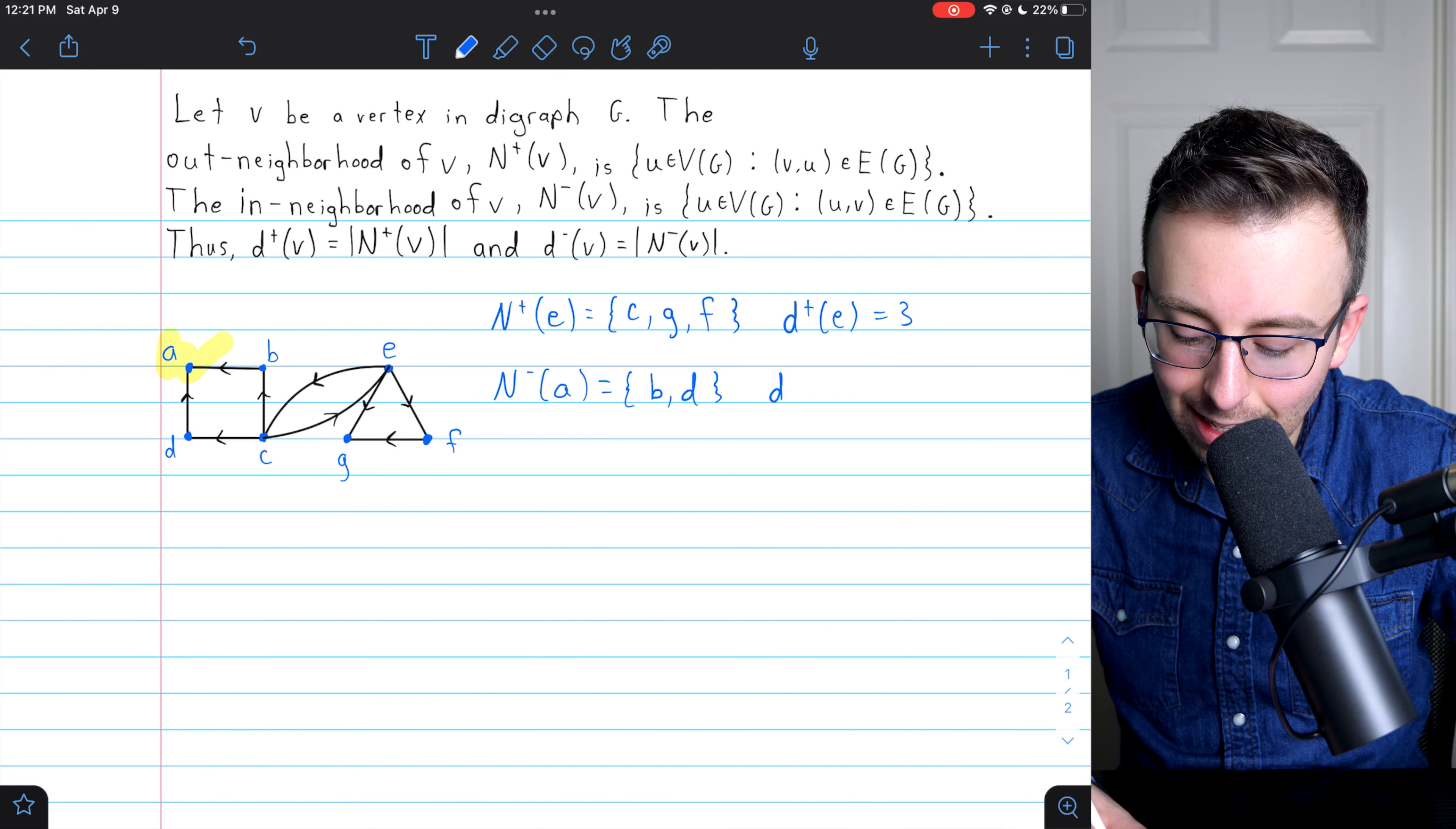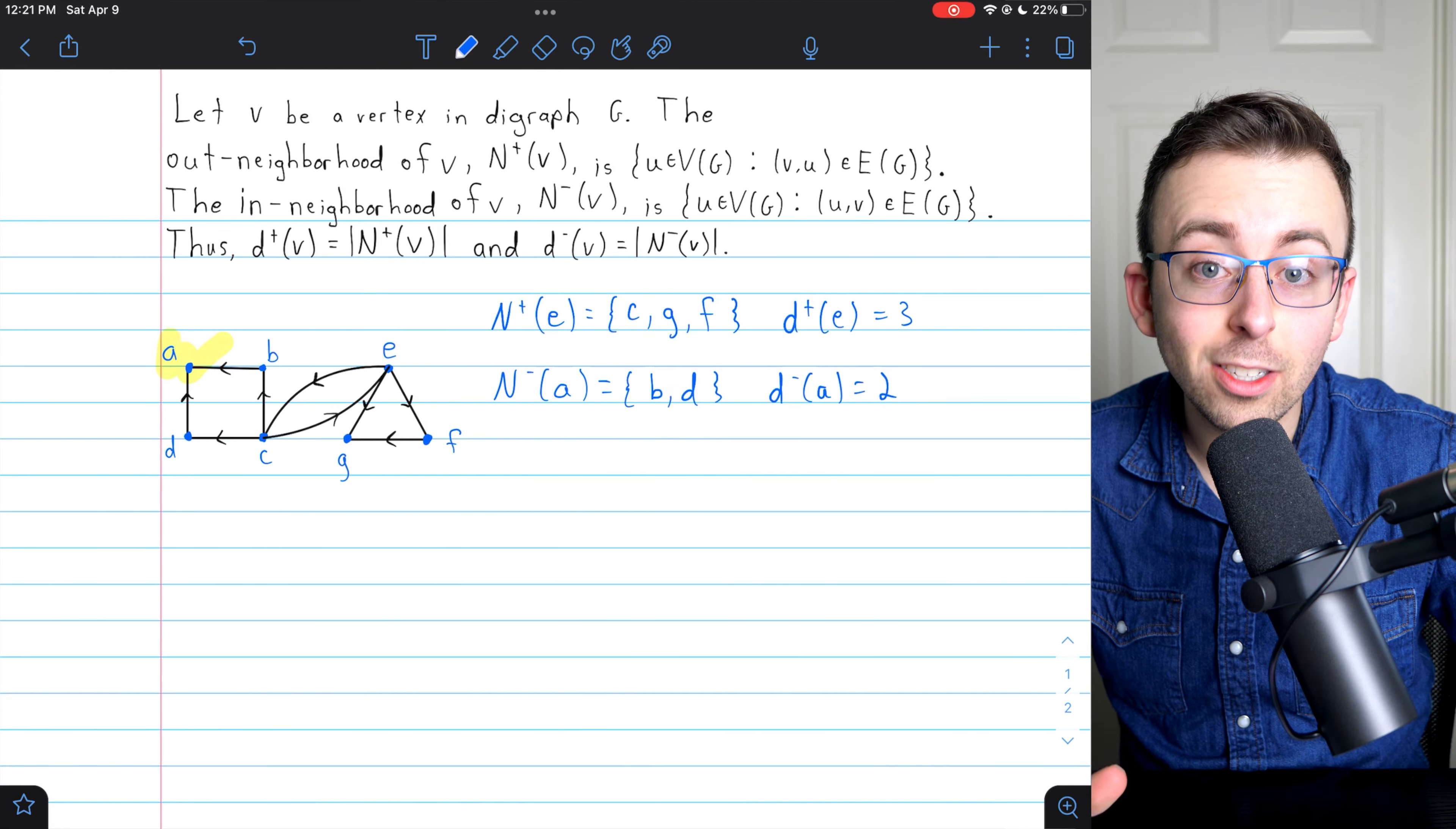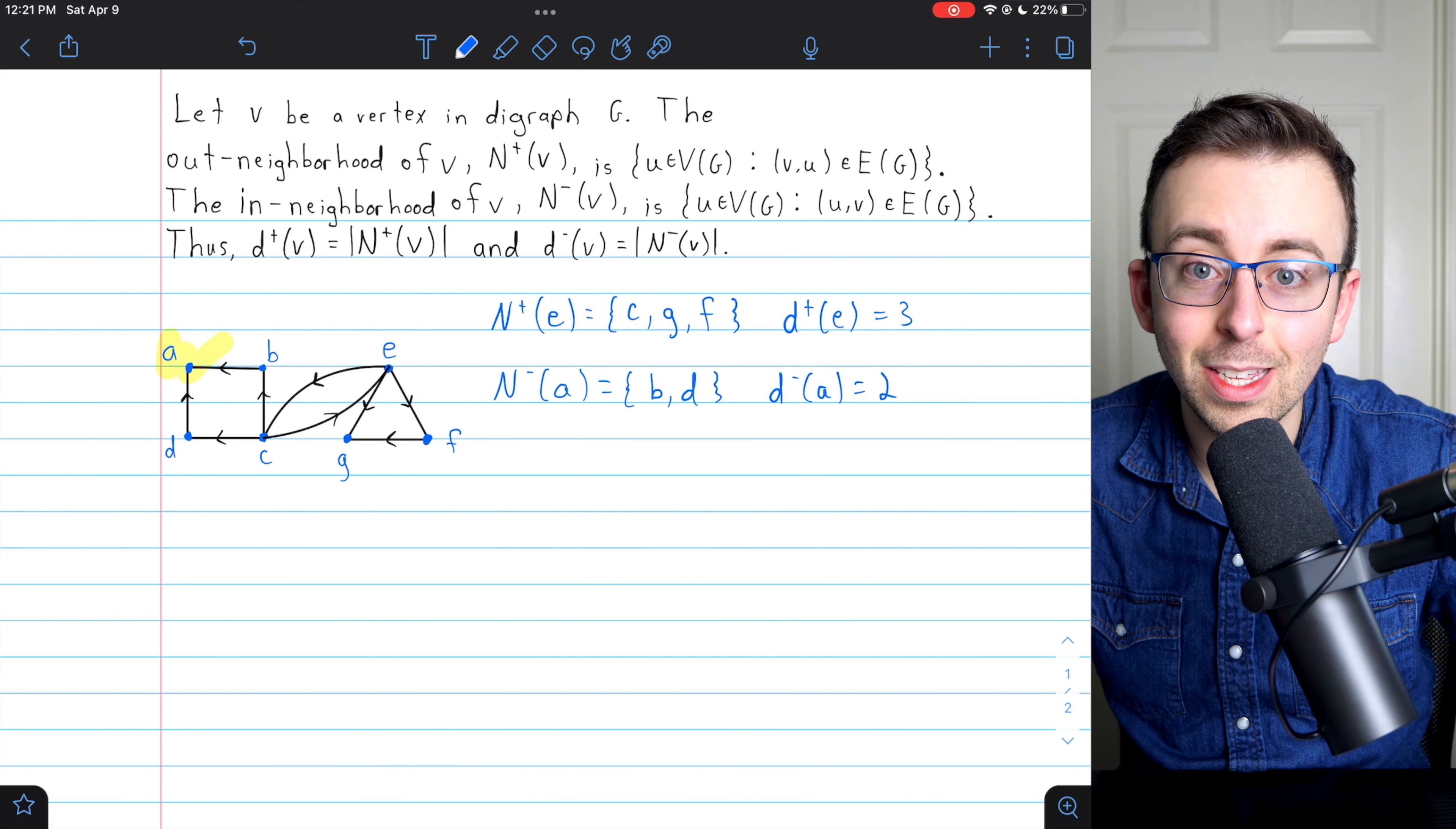And of course, the in-degree of A is two. A happens to be adjacent to no vertices. So if we wrote the out-neighborhood of A, it would just be empty.